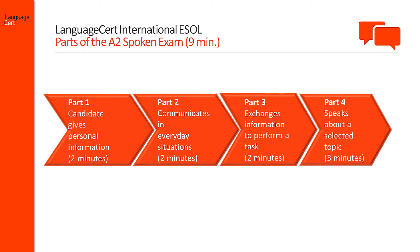Part 2 requires the candidate to take part in a situational role play. The aim of this task is for the candidate to use functional language in a range of real-life situations. The candidate is presented with 2 or 3 situations and both the interlocutor and the candidate need to produce at least 2 turns each time. Part 2 lasts 2 minutes.